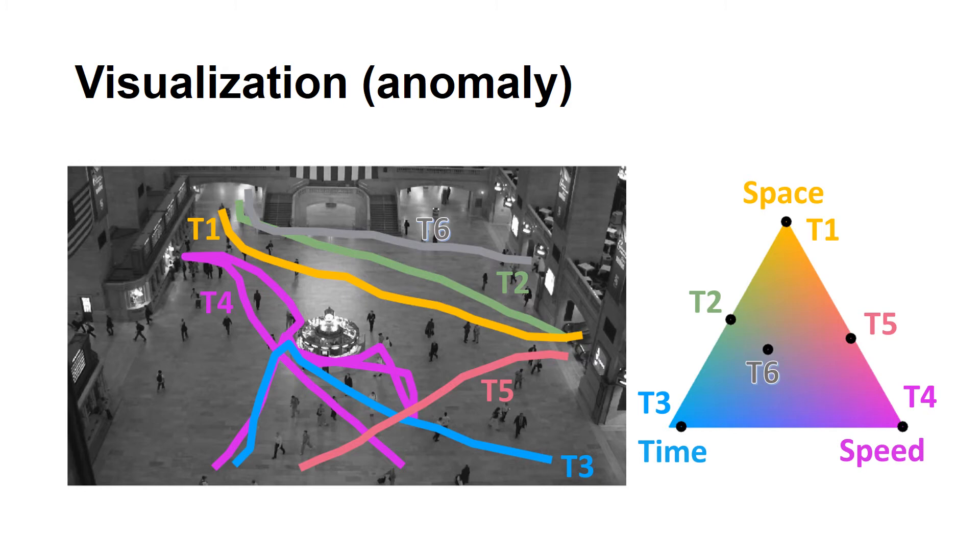The triangle with the trajectory color indicates what factors contribute more. If the trajectory is closer to one vertex, say the space vertex, it means its time and speed profiles are very different from the others. For example, T1, the yellow trajectory, is identified as an anomaly. In the triangle, it shows that its space likelihood is relatively high, which means it has an unusual time and speed pattern.